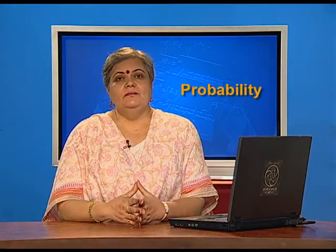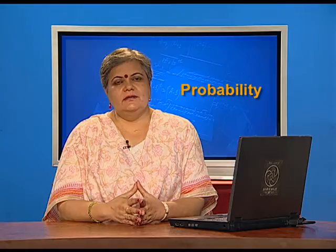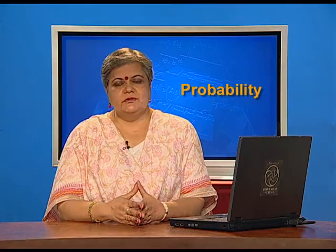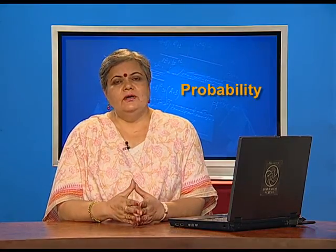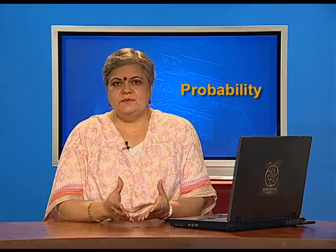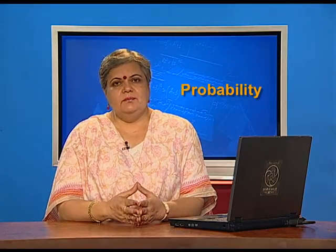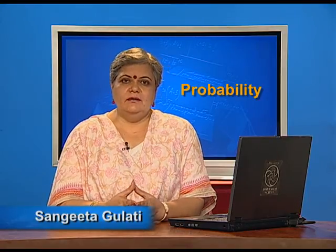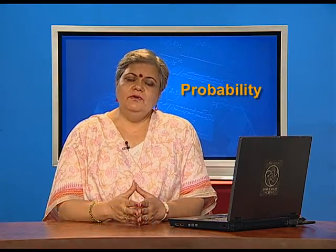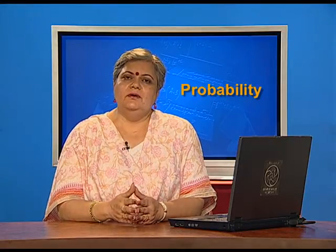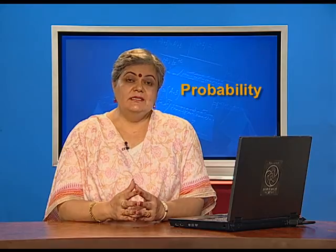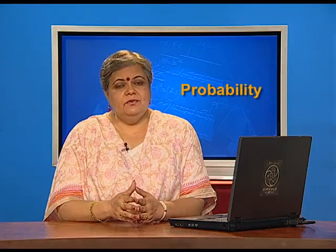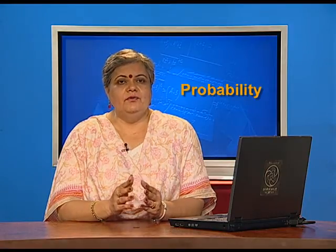Hello and welcome to another lesson on probability. Today, we will talk about random variable and probability distribution. As you know, the outcome of a random experiment need not always be a number. For example, when we toss a coin, I may get head or tail, but very often we need to associate a number with such outcomes. That is, there is a need to quantify the outcomes, and that is where we bring in the idea of random variable.